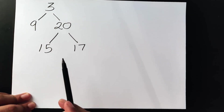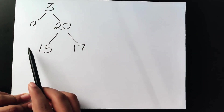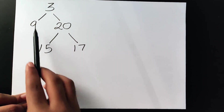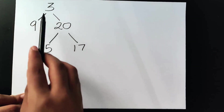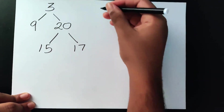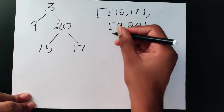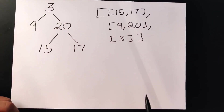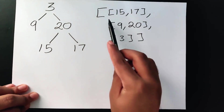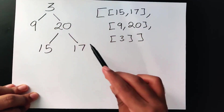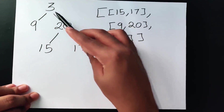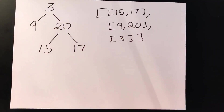But for this question we need to do it in reverse. So first we're going to have 15 and 17, then 9 and 20, and then 3. That's how our final result is going to look like — a list of lists starting from the bottom, moving left to right.